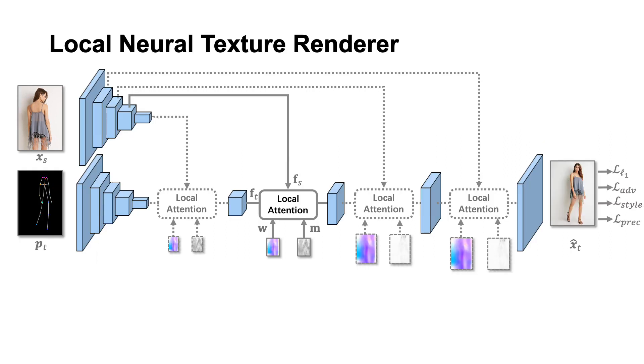The local neural texture renderer is used to generate target images. It transforms the source features to target skeletons according to the estimated flow fields. The information transformation occurs in the local attention modules.